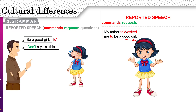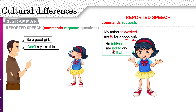Requests. Don't cry like this. To report requests, we do the same thing — except we add 'not,' because it's negative. 'Not to.' My father told me — or asked me — not to cry like that. The difference? To cry like that versus not to cry like that — with 'not.'